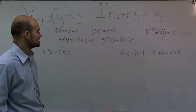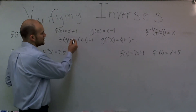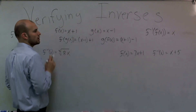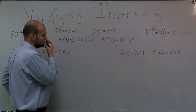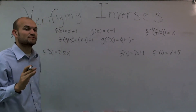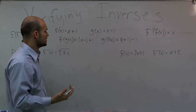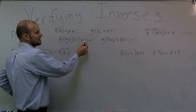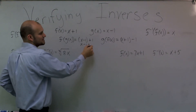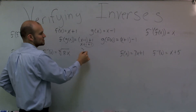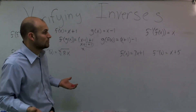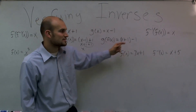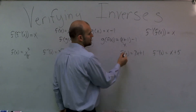There's something special that happens when I use composition. When you plug one function into the other, and you do the composition of two functions that are inverses of each other, something really special happens. When I plug g(x) in for x in f(x), after simplifying, those cancel out and I'm just left with x — my identity element.